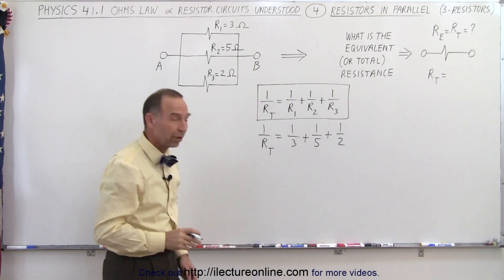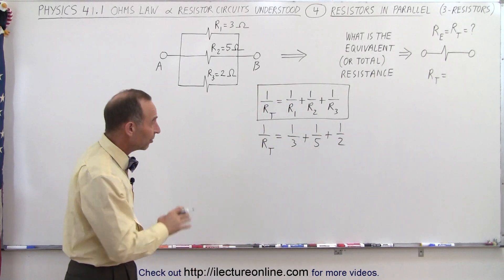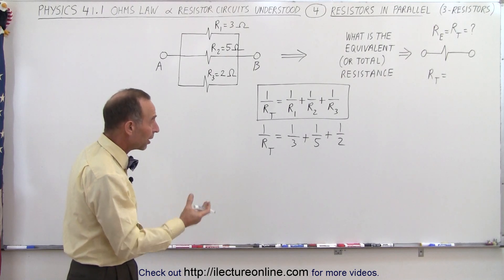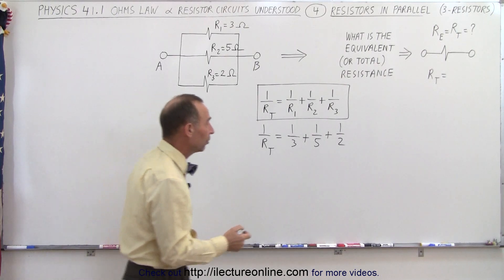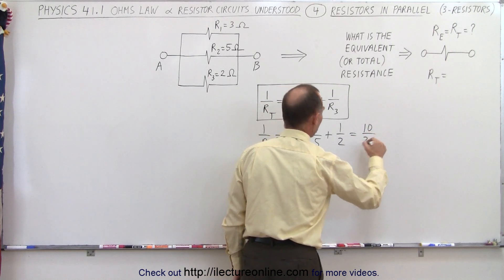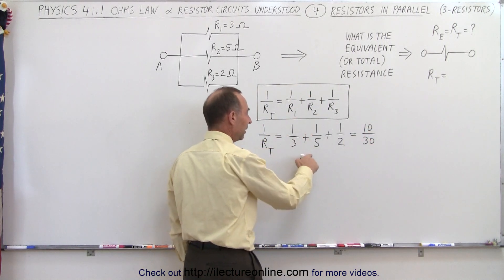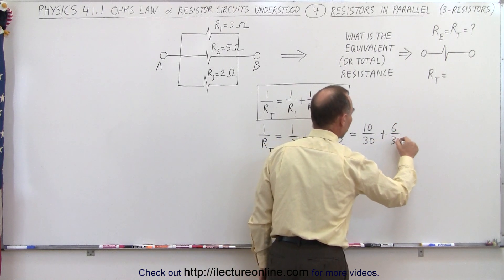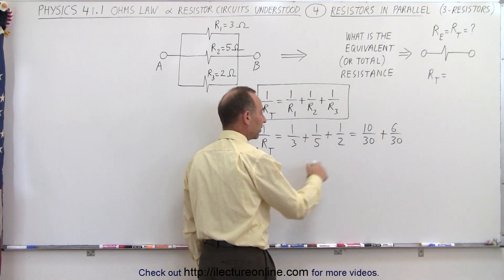Now, notice we have three fractions. Looks like the common denominator in this case, since they're all prime numbers, is going to be the product of them, which is 30. So, this can be written as 10 over 30 by multiplying both the top and bottom by 10. This would be plus 6 over 30 by multiplying top and bottom by 6.